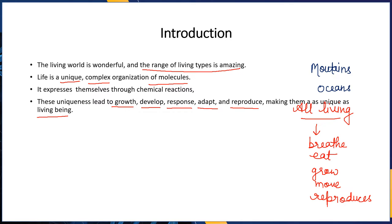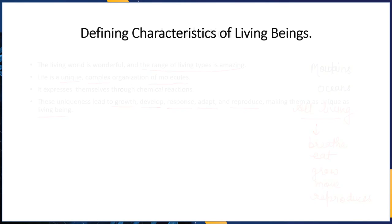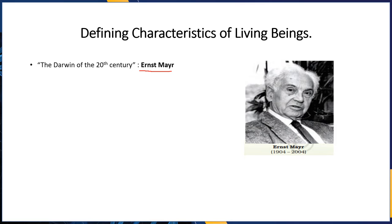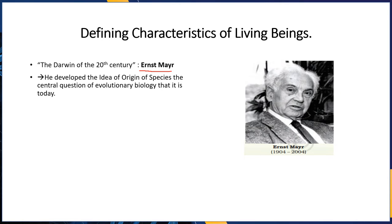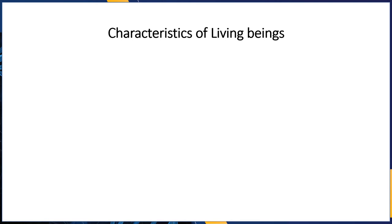All living things have life, though some might not show evident signs. For example, a tree would probably not react the same way a human would. Now, defining the characteristics of living beings — the Darwin of the 20th century, Ernest Mayr, born 1904 and died 2004, developed the idea of the origin of species, the central question of evolutionary biology.